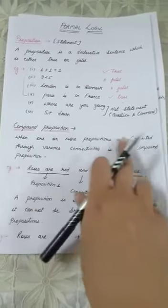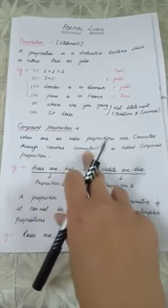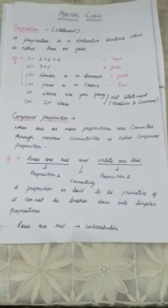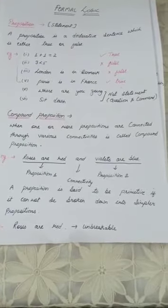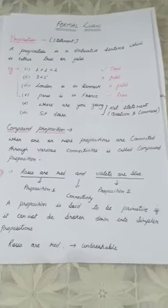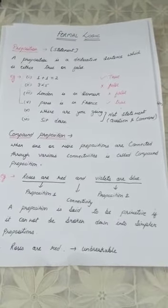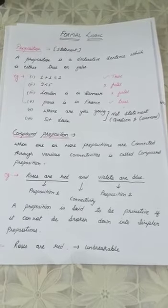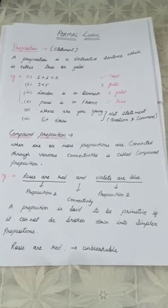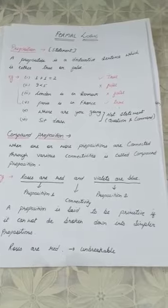Then we see compound proposition. When one or more propositions are connected through various connectivities, it is called compound proposition. What is connectivity? How do you join two statements? Either that can be using 'and' or 'or.' By using these two you can join two statements. Like, 'I am eating my food and I am going to school.' When you connect two different propositions to make it as one, that is called compound proposition.